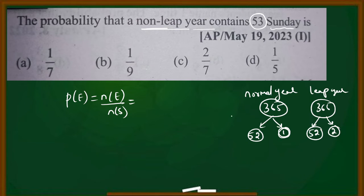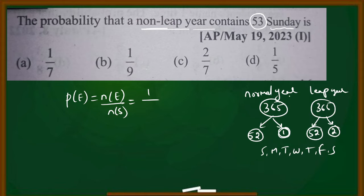The number of favorable outcomes is one — just Sunday. The total outcomes are the seven days of the week: Sunday, Monday, Tuesday, Wednesday, Thursday, Friday, Saturday. So the answer is 1 by 7.